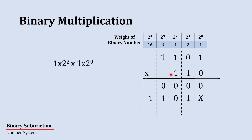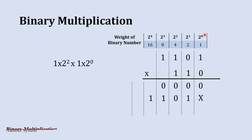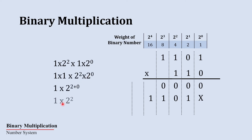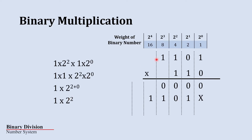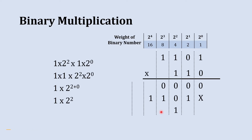We are going to multiply this 1 with this 1. This 1 has a weight of 2^2 and this 1 has a weight of 2^0. Their multiplication is 1 and the product of their weights is 2^2, which is the 4's place. So this 1 will be placed at the 4's place and the two preceding places will be left blank.